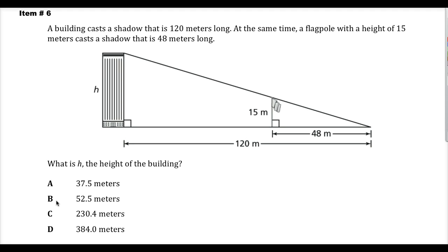The question said, a building casts a shadow, well not at night, but anyway, a building casts a shadow that's 120 meters long. At the same time, a flagpole with a height of 15 meters casts a shadow that is 48 meters long. Look on the bright side, at least they gave you all the same units. Everything's in meters, so that's a bonus.